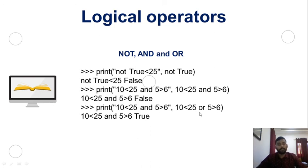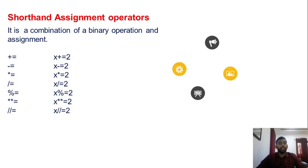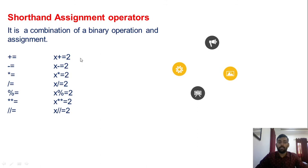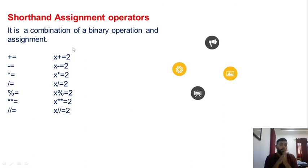Shorthand (augmented assignment) operators combine a binary operation with assignment. For example, x += 2 expands to x = x + 2; x -= 2 means x = x - 2; x *= 2 means x = x * 2; x /= 2 means x = x / 2. These are a minimized way of expressing assignment statements.